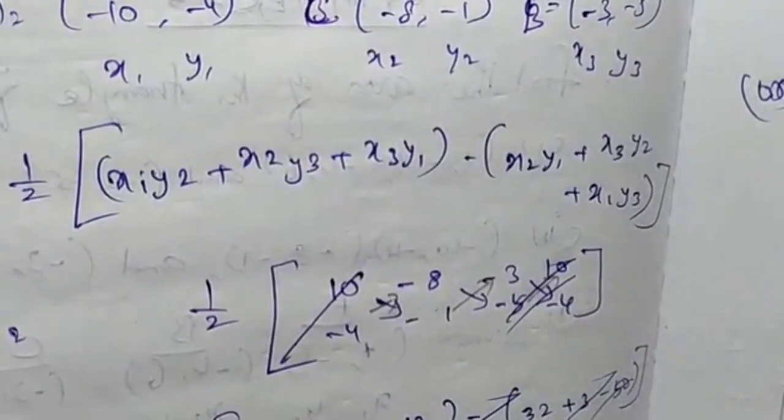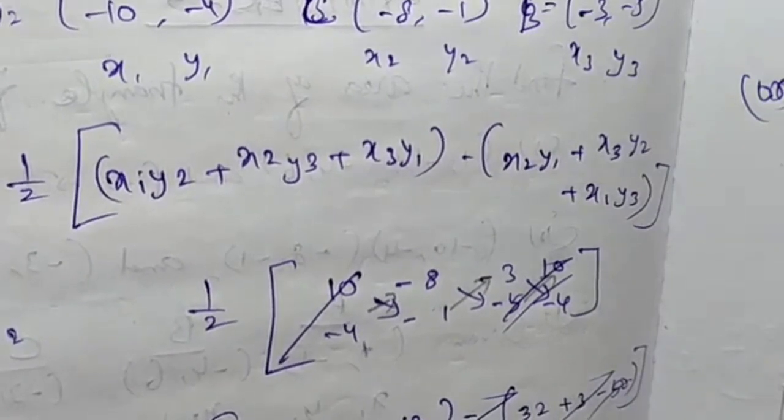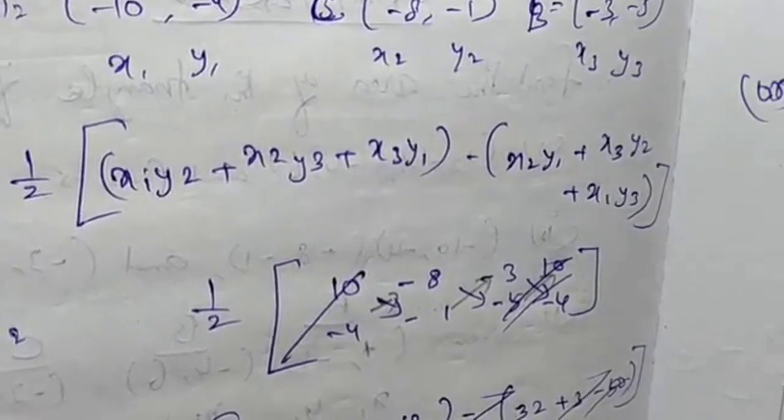One by two times: x1 y2 plus x2 y3 plus x3 y1 minus x2 y1 plus x3 y2 plus x1 y3. If you apply this formula, you can apply these values.